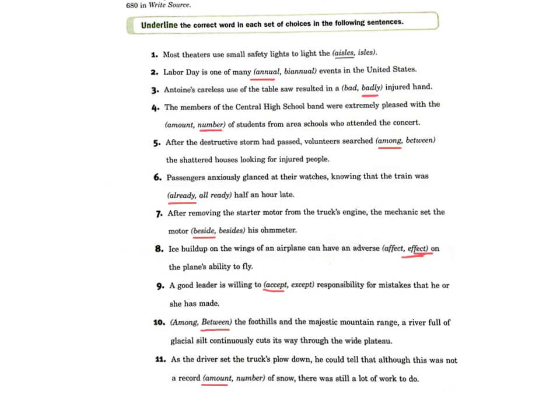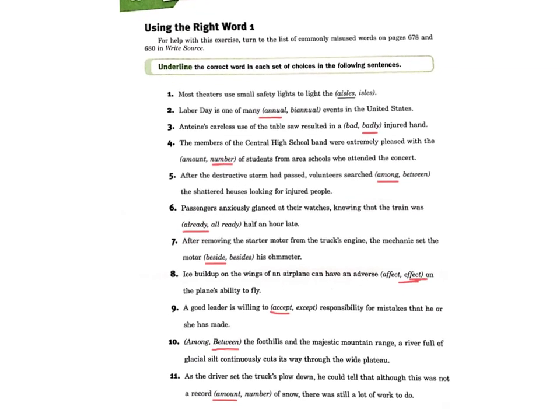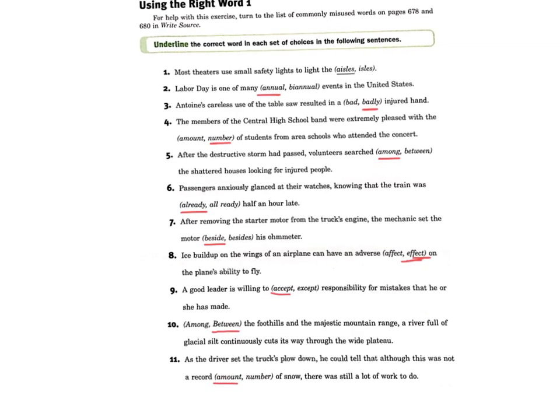Here's a review of the worksheet on choosing the right word, number 58. If we use annual, it's something that occurs every year. Badly — we need an adverb to describe injured. We can count all the students, so that's why we go with number. Among is used because it's probably more than two houses, so that's why we use that one for number five.